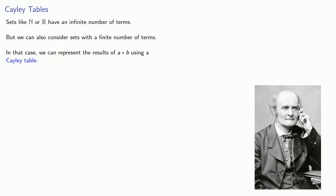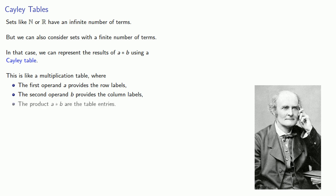A Cayley table is like a multiplication table, where the first operand A provides the row labels, the second operand B provides the column labels, and the product A star B are the table entries.